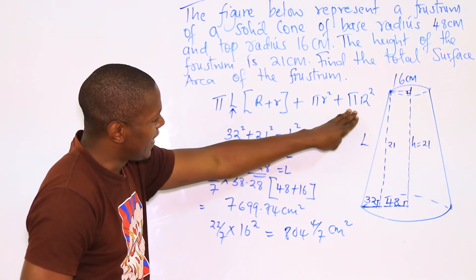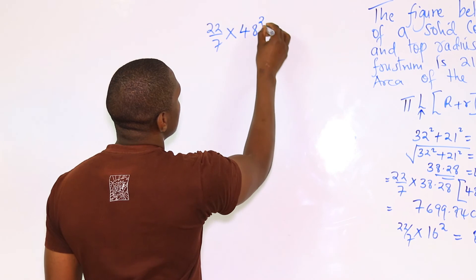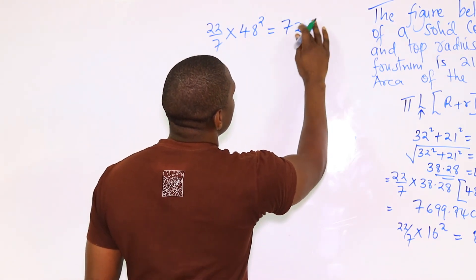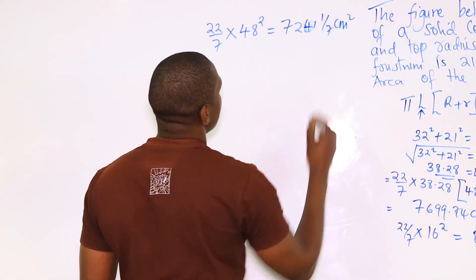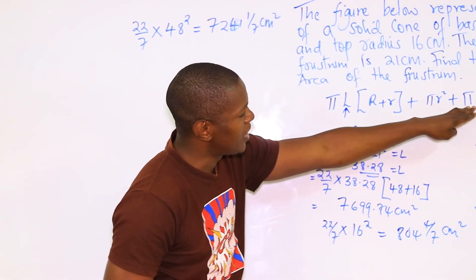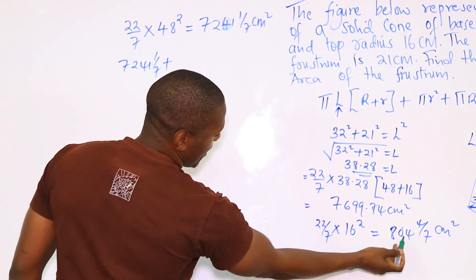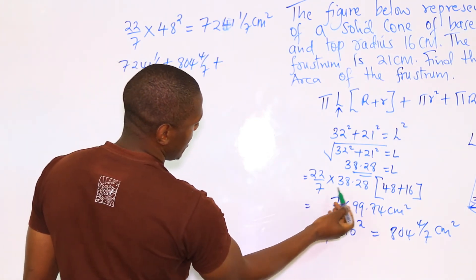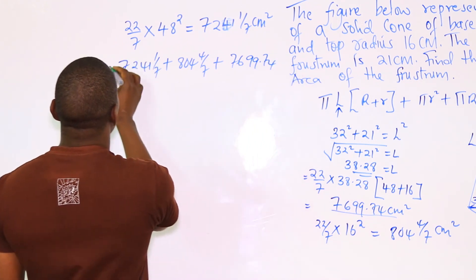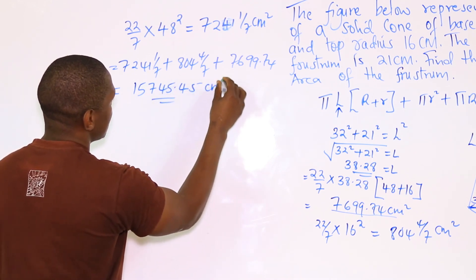To get the area of the bottom, that will be 22/7 times 48 squared. Keying into your calculator, you'll get 7241 1/7 centimeters squared. So the total surface area will be the area of the curved surface added to the area of the top, then added to the area of the bottom. That will be 7241 1/7 plus 804 4/7 plus 7699.74. When you add this using your calculator, you'll have 15745.45 centimeters squared. Thank you.